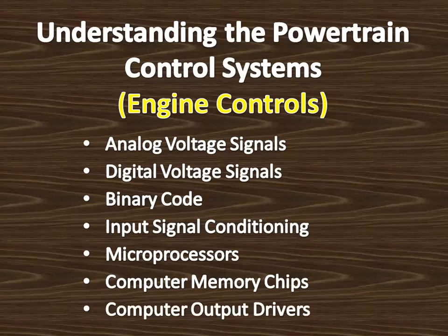Computer output drivers operate many different output controls such as relays and solenoids. The computer contains a number of drivers — single transistors that switch the output controls on and off — and the microprocessor commands the drivers to operate these controls. For example, if the ECT (engine coolant temperature) sensor indicates the engine temperature is high enough to require cooling fan operation, the microprocessor commands the appropriate driver to ground the cooling fan relay winding, closing the relay contacts and supplying voltage to the cooling fan motor.